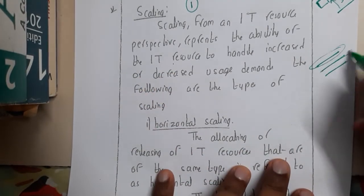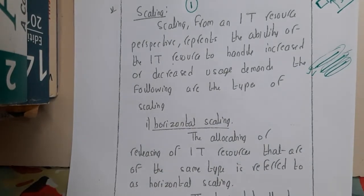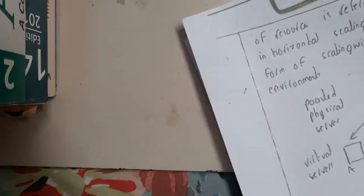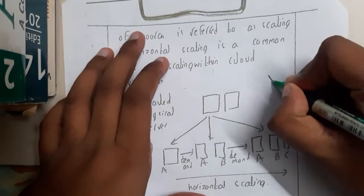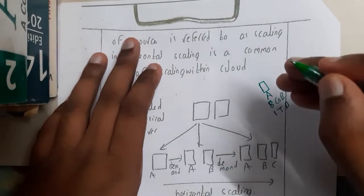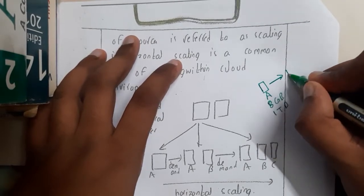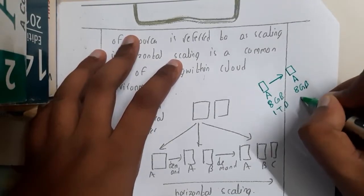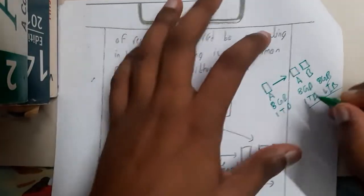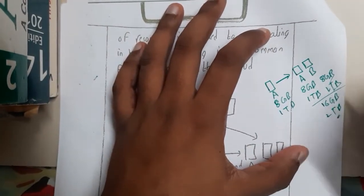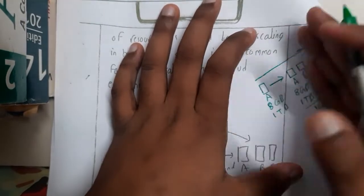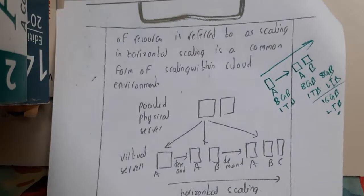Let's discuss horizontal and vertical scaling. In horizontal scaling, assume you have system A with 8 GB RAM and 1 TB hard disk. Now you want to upgrade. Instead of removing the old system, you keep system A and add a new system B. If system B also has 8 GB RAM and 1 TB hard disk, your total becomes 16 GB RAM and 2 TB hard disk. Keeping the old system and adding a new one is horizontal scaling.